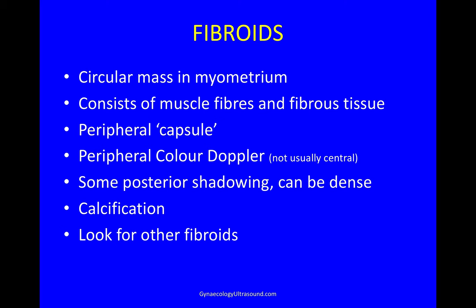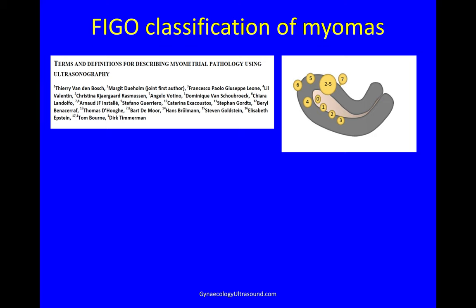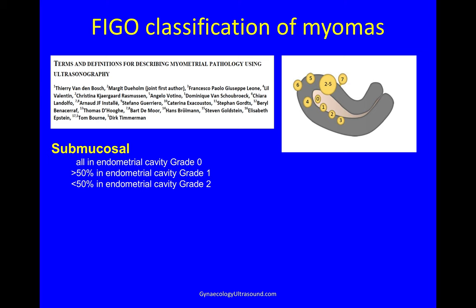Fibroids tend to be slow growing. We usually think of submucosal, intramural and subserosal fibroids, but we use the FIGO classification to give us a bit more information. There are submucosal fibroids where they can be all in the endometrial cavity — this is a fibroid polyp where most of it's in the cavity — grade one where less than half is in the cavity, grade two, or a submucosal fibroid just abutting the endometrial cavity.